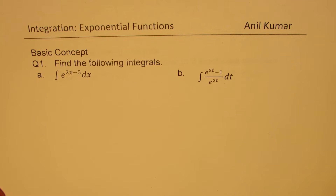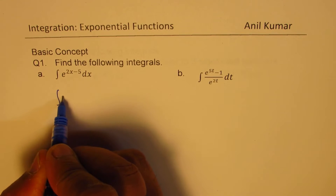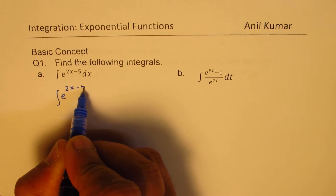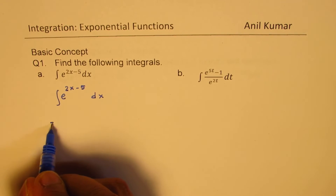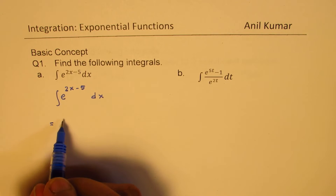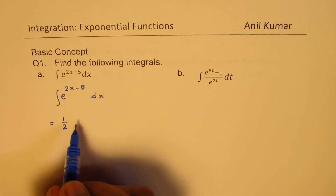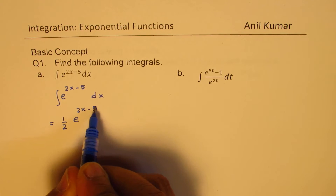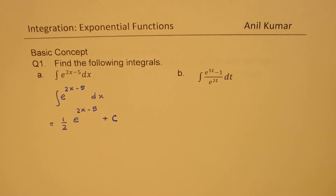The very first one: we need to integrate e to the power of 2x minus 5 dx. By direct application of the formula, we get 1 over 2 times e to the power of 2x minus 5, plus constant C. So that is our result.